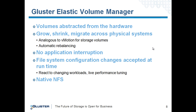We've abstracted the logical volumes from the hardware — they're logical volumes that can grow, shrink, and even migrate across physical systems. You can think of volume migration as analogous to vMotion for storage volumes. Gluster takes care of all the automatic rebalancing. The Gluster Elastic Hashing Algorithm keeps track of where everything is without a centralized metadata server. You can do all these things without interrupting your applications or services — you can introduce file system configuration changes that are accepted at runtime, without restarting services, allowing you to react to changing workloads, unpredictable events, and even do live performance tuning.